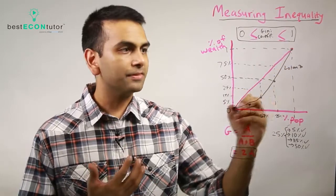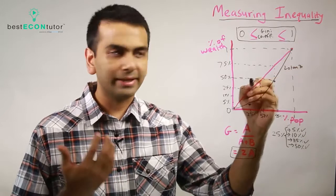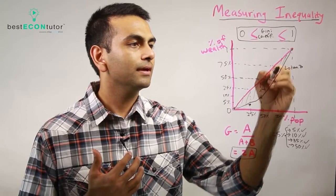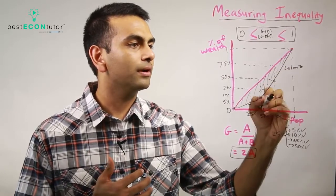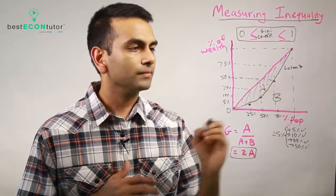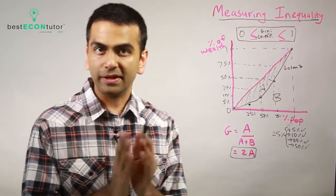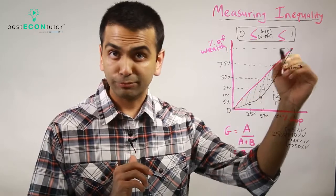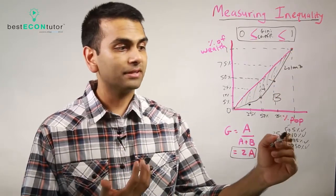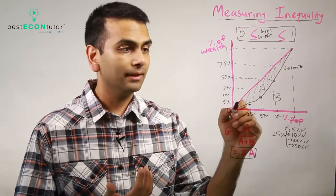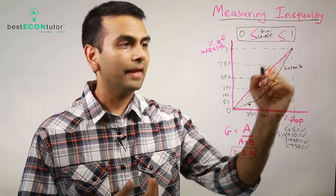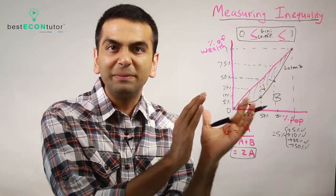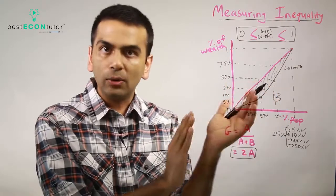Now we can break this triangle up into area A and area B. Notice, if everyone was truly equal, the Lorenz curve would be the line of perfect equality. If we lived in a society where all quartiles were 25%, then the black line and red line would be the same, and area A would be zero—there would be no area there.